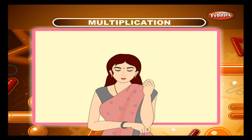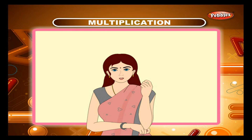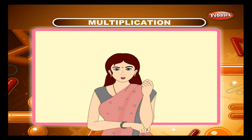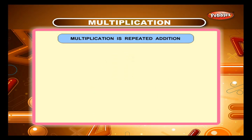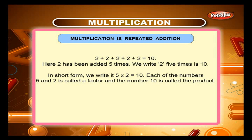Multiplication is repeated addition. The short way of finding the sum when all add-ins are the same is called multiplication. 2 plus 2 plus 2 plus 2 plus 2 is equal to 10. Here 2 has been added 5 times. We write: 2, 5 times is 10. In short form we write it as 5 into 2 is equal to 10.